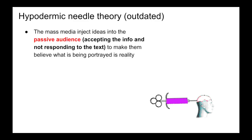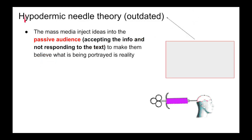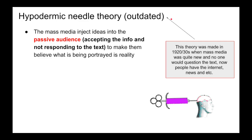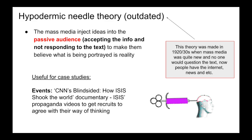The Hypodermic Needle Theory — this is quite old, so it wouldn't be as useful, but it's a well-known theory. The mass media inject ideas into the passive audience and make them believe what is being portrayed as reality. The first time this was used was when a radio broadcast called War of the Worlds was released and everyone believed that there were actually aliens coming down. There was no mass media at the time, no internet or anything like that to search up if it was true, which meant no one could question the text and believe it. This is useful for case studies like events — so how ISIS shook the world, as they got propaganda videos to recruit people and to get them to agree with their way of thinking.